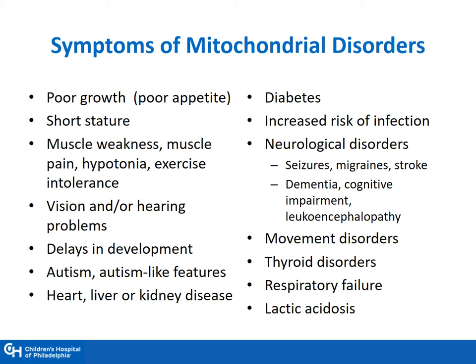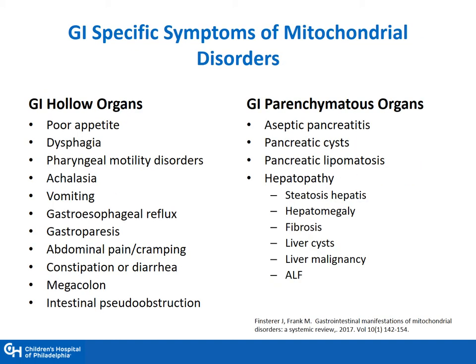Autism has been linked to mitochondrial disorders, as we will discuss later. Other symptoms include neurological disorders, endocrine disorders, or respiratory failure. When we think of GI-specific symptoms of mitochondrial disorders, we think of a variety of different symptoms. Symptoms such as poor appetite can occur, and poor appetite then leads to weight loss, which presents as anorexia and/or cachexia.